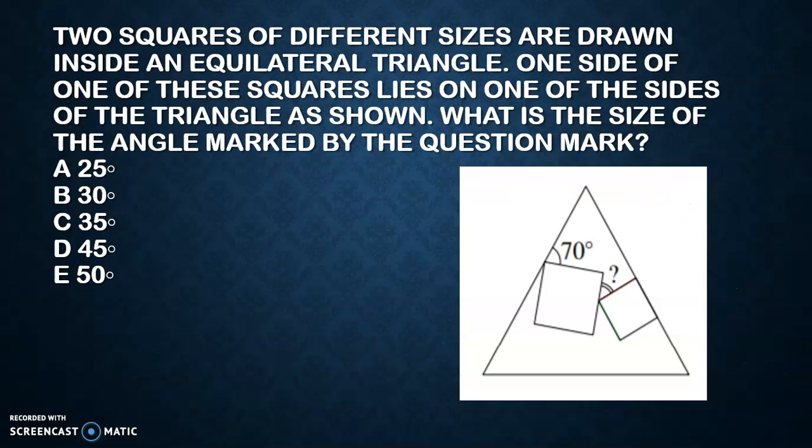If you see this question: two squares of different sizes - this is one square and this is my second square - are drawn inside an equilateral triangle. The moment they say equilateral triangle, you can mark this as 60 degrees. Now they say what is the size of the angle marked by question mark? Try to underline the border and just see what shape you are getting.